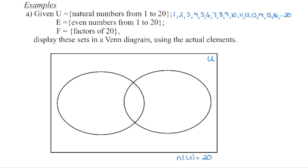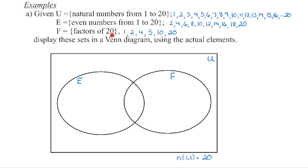Subset F is the factors of 20 — numbers that divide evenly into 20 with no remainder. Going in order: one times 20, two times 10, three does not divide evenly, four times five. We then identify elements common to both subsets: two, four, ten, and twenty appear in both E and F, so those four elements go into the intersection.